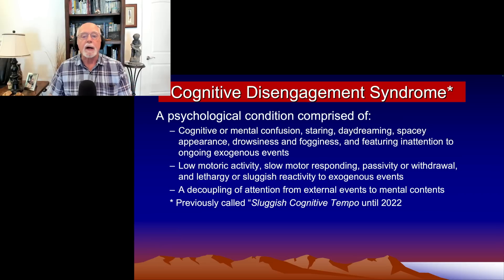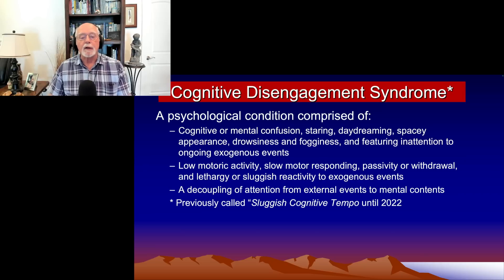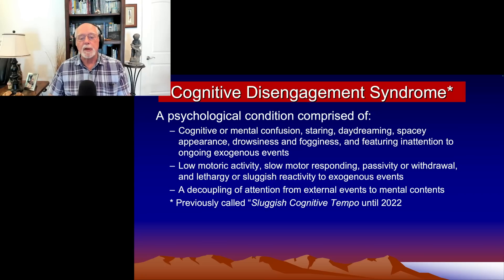The individual appears to be mentally or cognitively disengaged or preoccupied — hence the name Cognitive Disengagement Syndrome. The second dimension is the dimension of low motor activity, usually characterized by hypoactivity at certain times, not continuously, slow motor responding, some degree of passivity in response to the environment, social withdrawal, and a general appearance of lethargy, including a sluggish reactivity to external events. It's believed these motor symptoms arise as a result of the cognitive symptoms: when you disengage from the environment and are preoccupied with mental content, you will likely behave in a much more reduced fashion toward the environment.